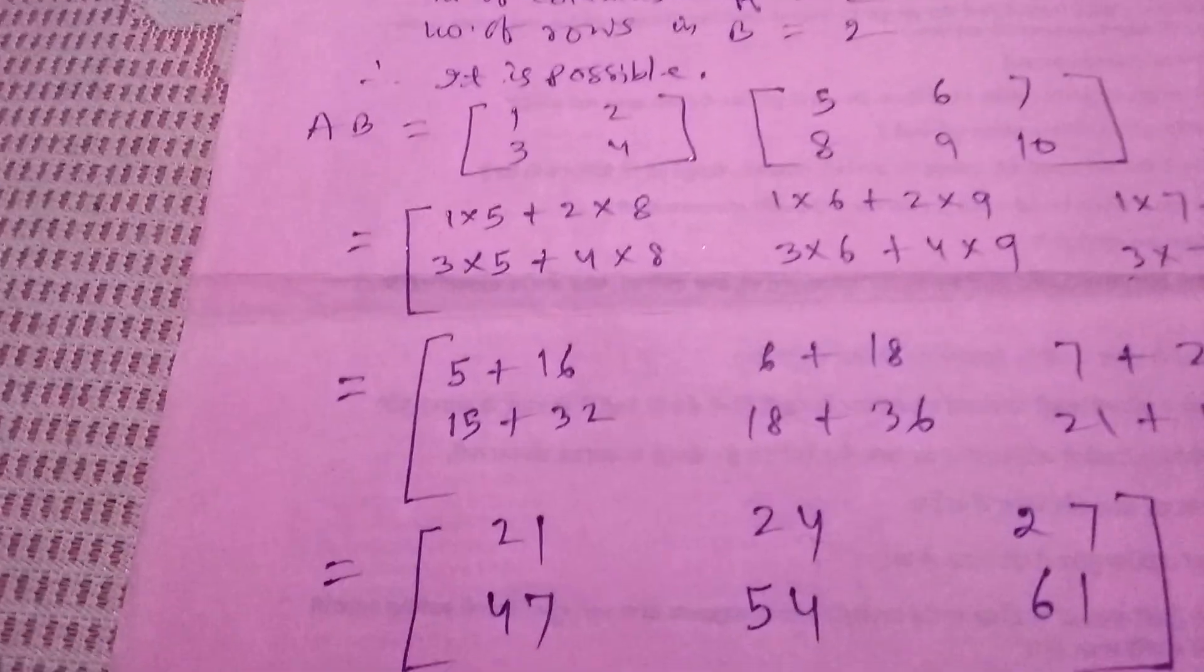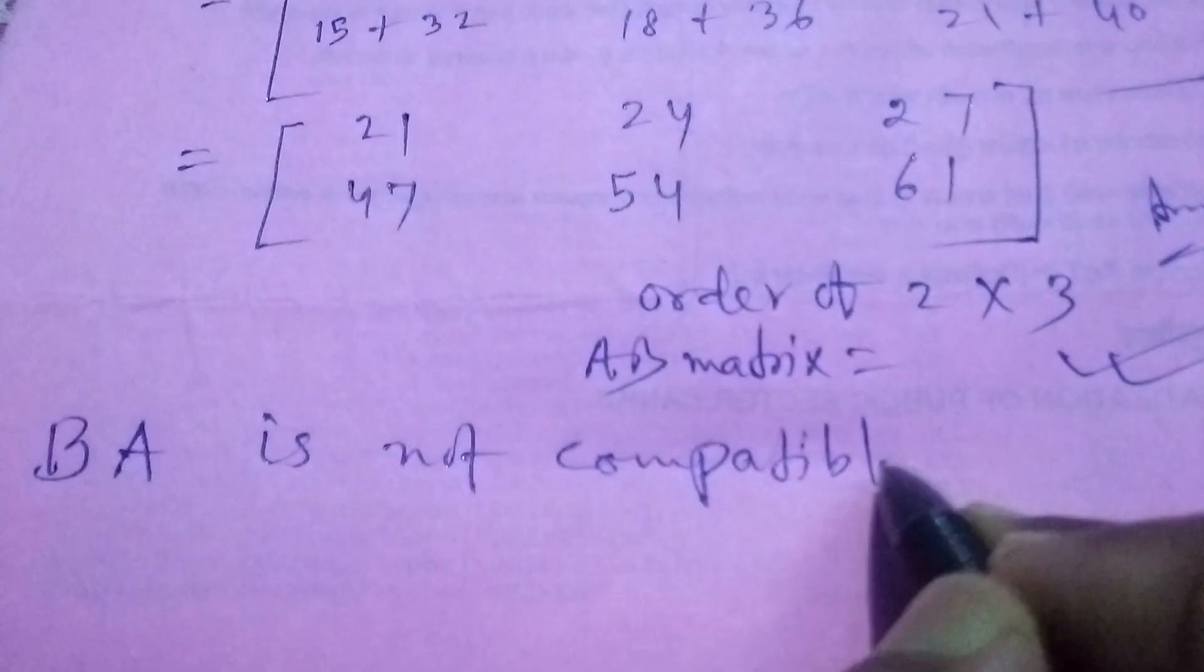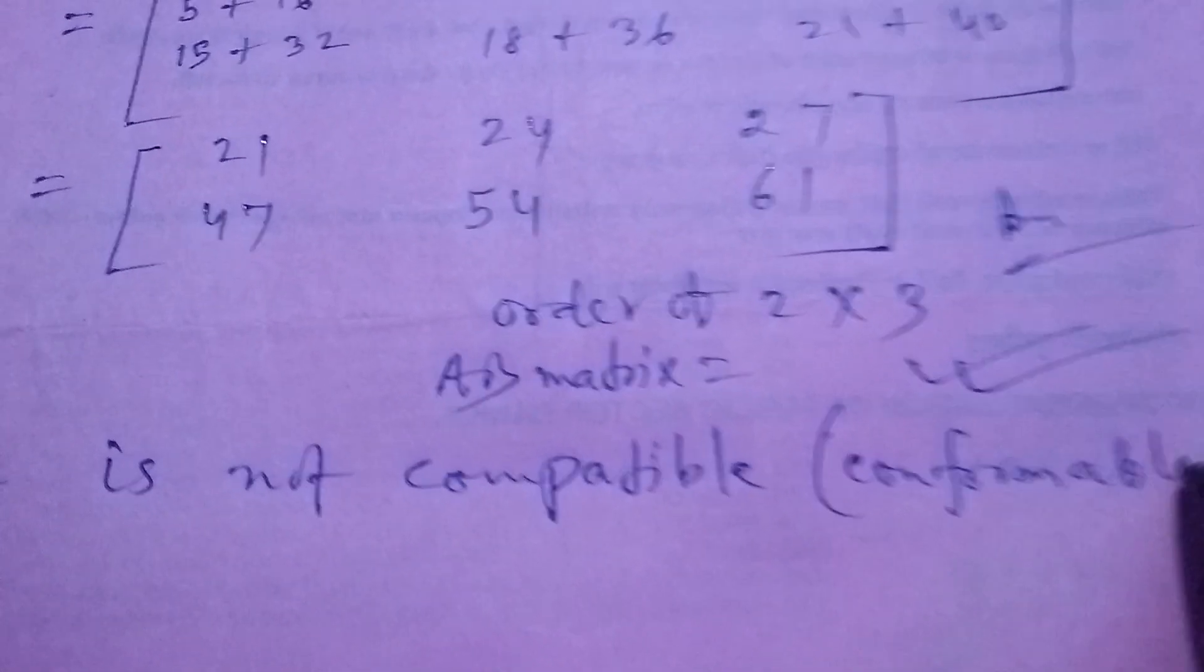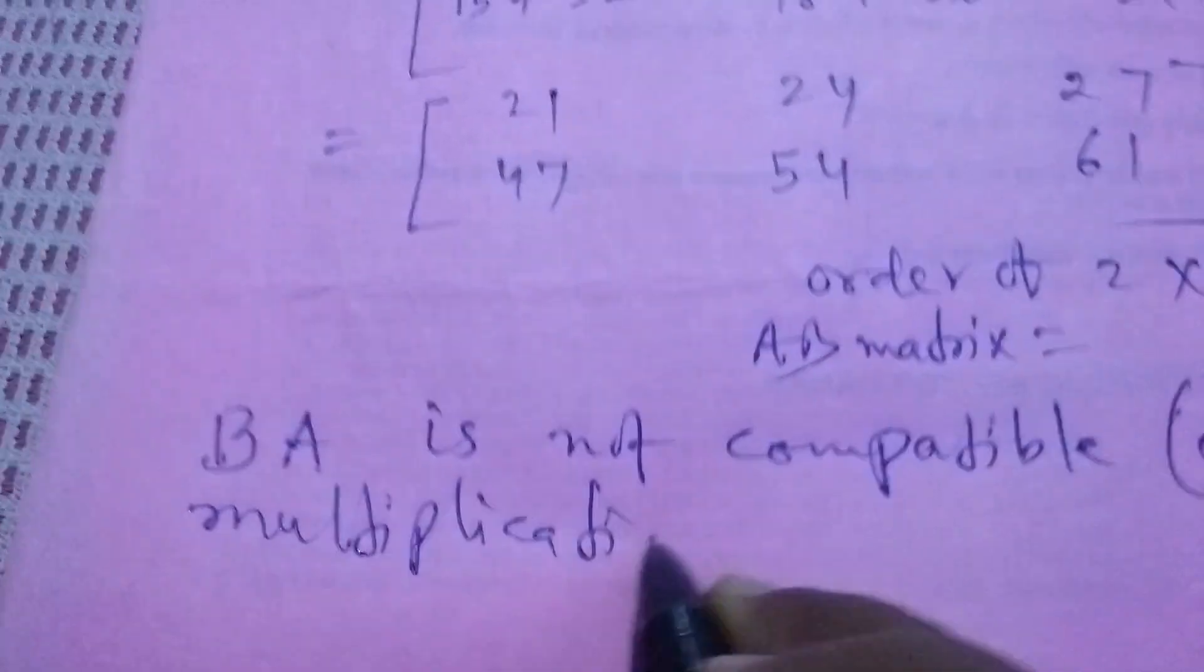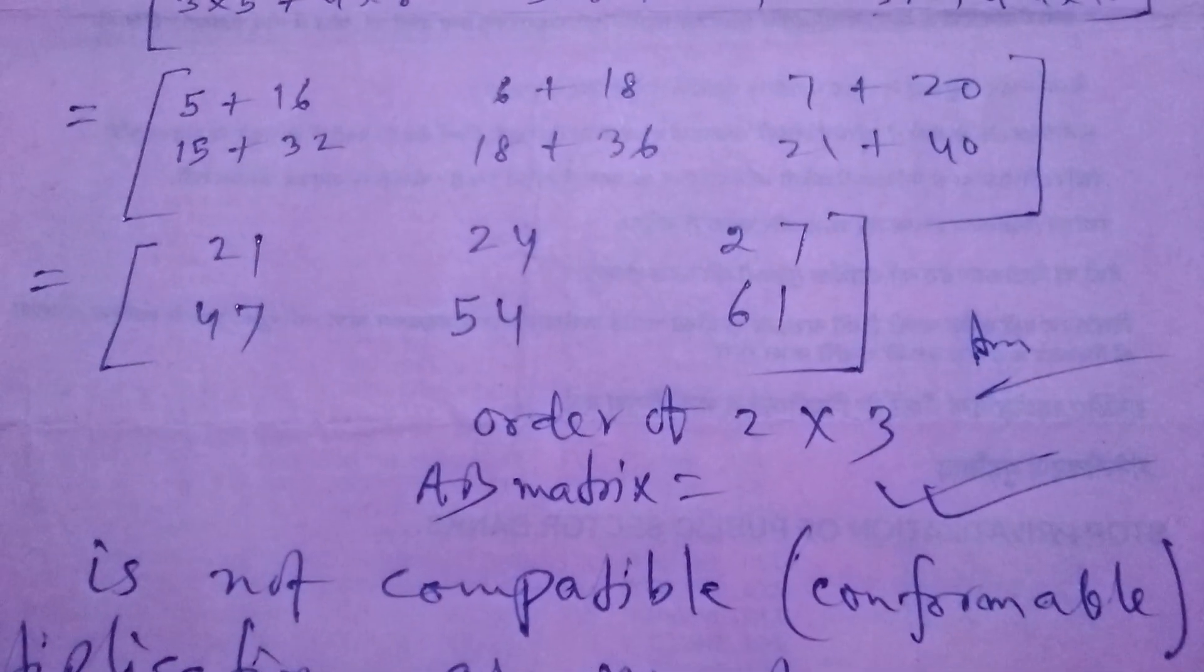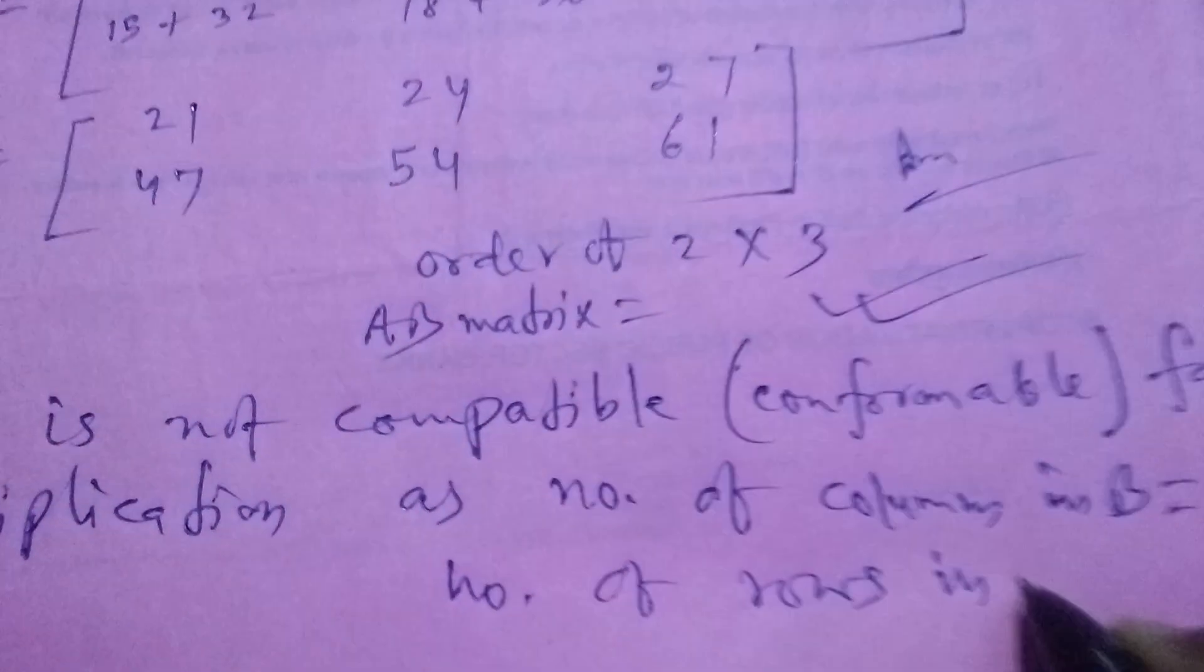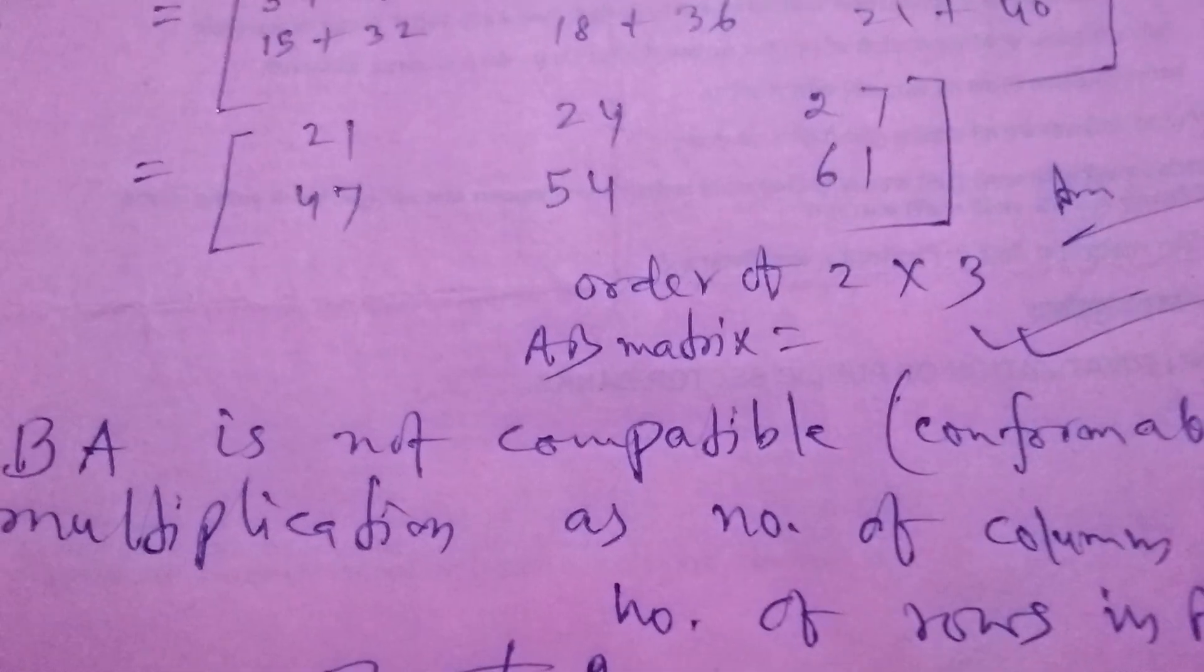In the same way, we will find if BA is possible or not. BA is not compatible or conformable for multiplication as number of columns in B is 3 and number of rows in A is 2. 3 is not equals to 2, so not possible.